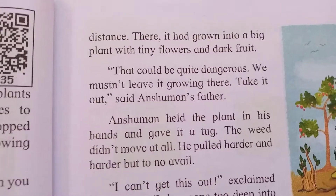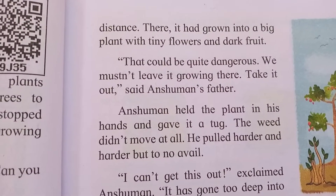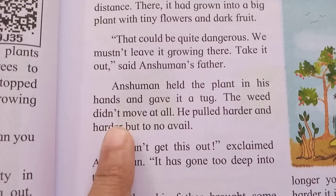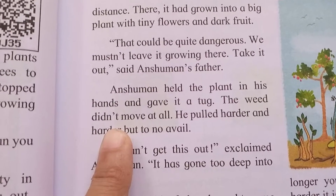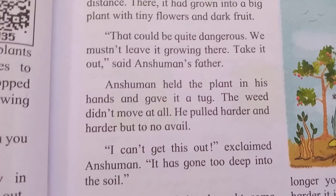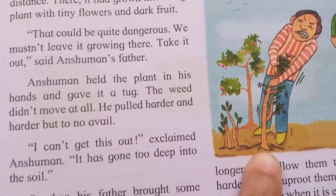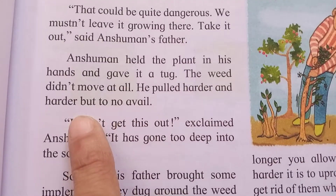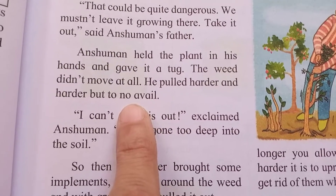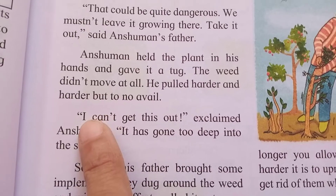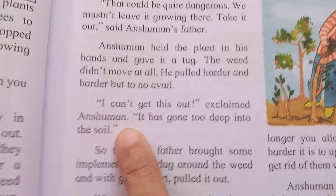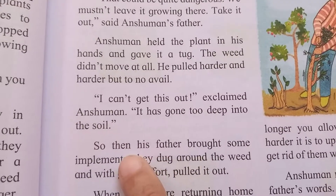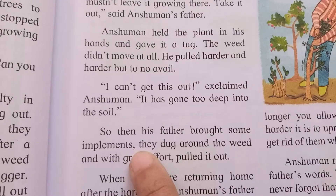The father said they mustn't leave it growing there and told Anshuman to take it out. Anshuman held the plant in his hands and gave it a tug, but it did not move at all. He pulled harder and harder but to no avail. He could not remove it. He said: 'I cannot get this out, it has gone too deep into the soil.' Then his father brought some implements and dug around the weeds.